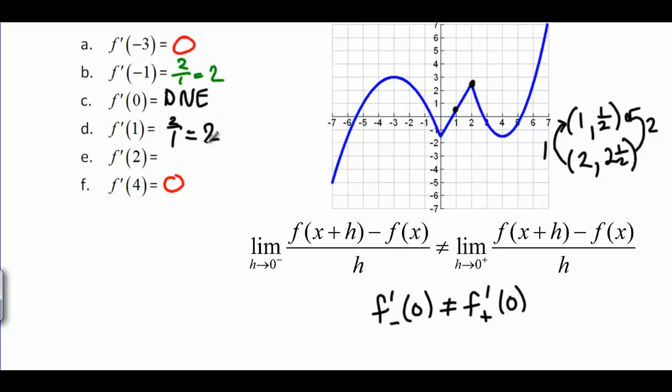Oh, and look. I've realized that we did something wrong back there on f prime of negative 1. Because we shouldn't have got the same answer at 1 and at negative 1, should we? So we have to be careful here.